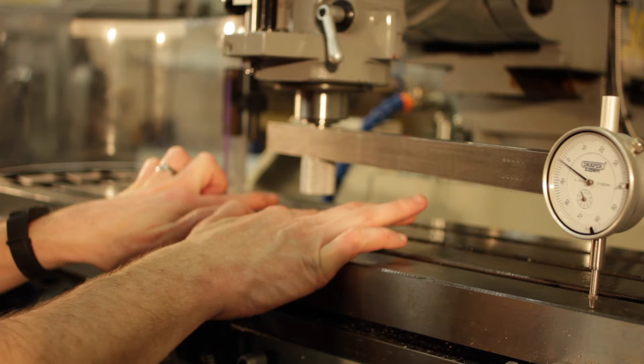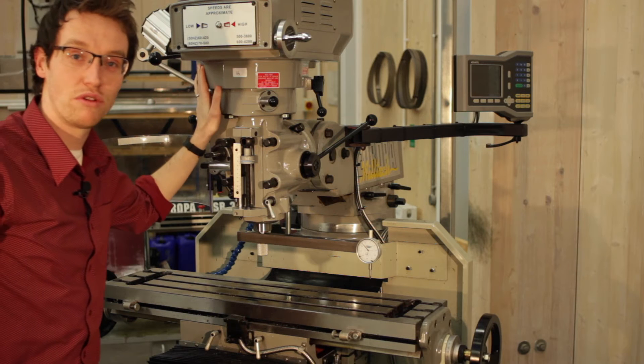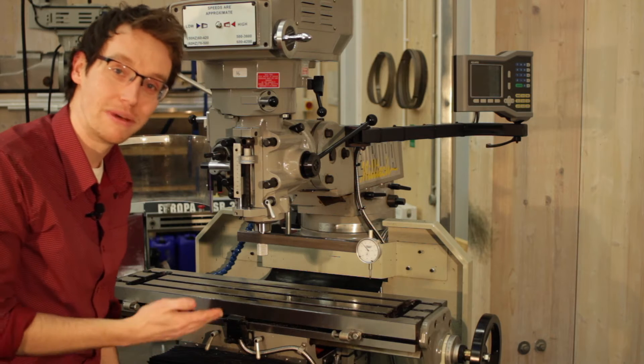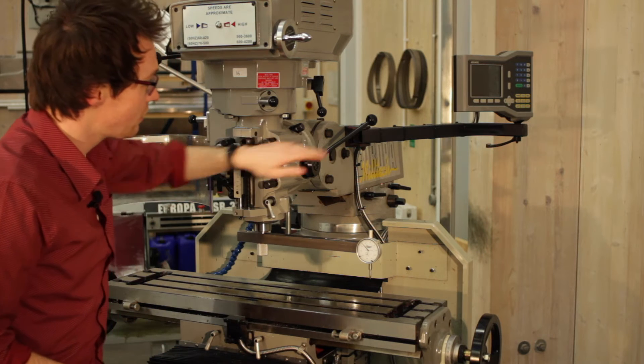Now that we've got the head roughly aligned using the scale on the side, we're going to bring the bed up to meet the DTI and also make sure that the gearbox is knocked out into neutral so that we can rotate the spindle.